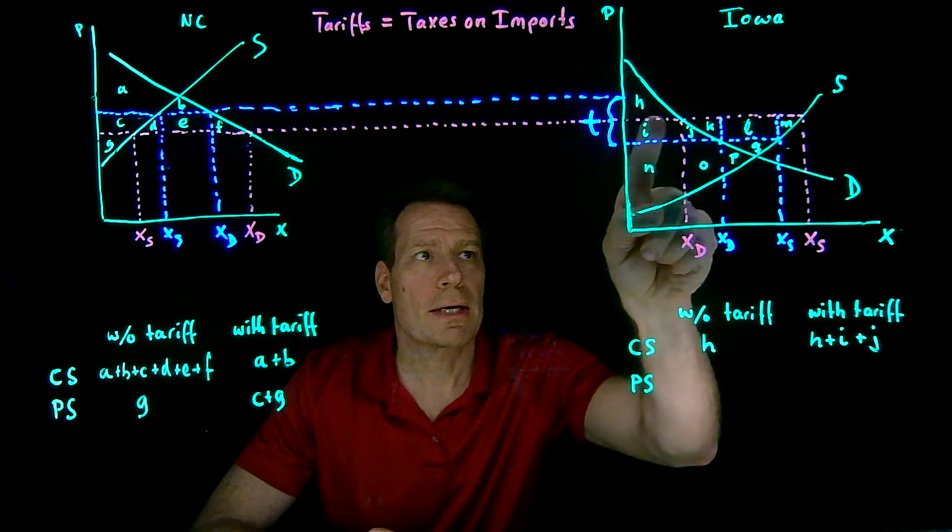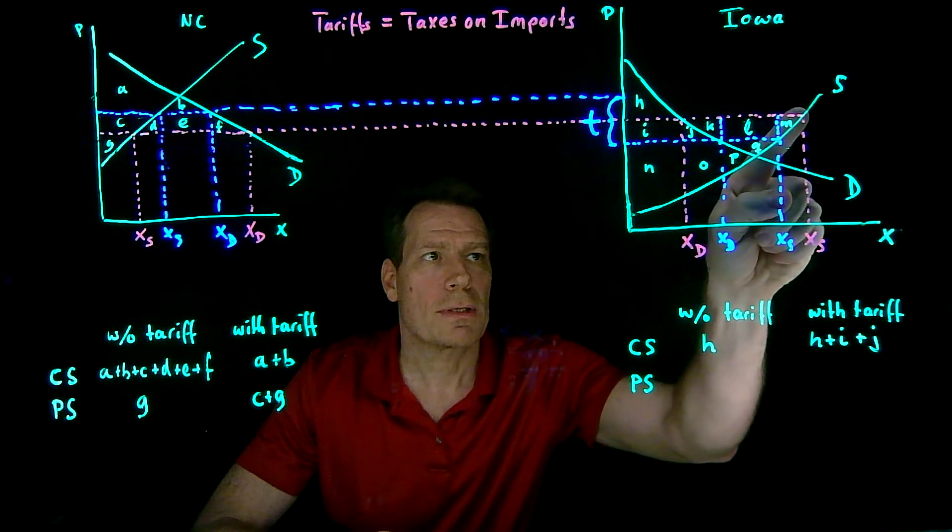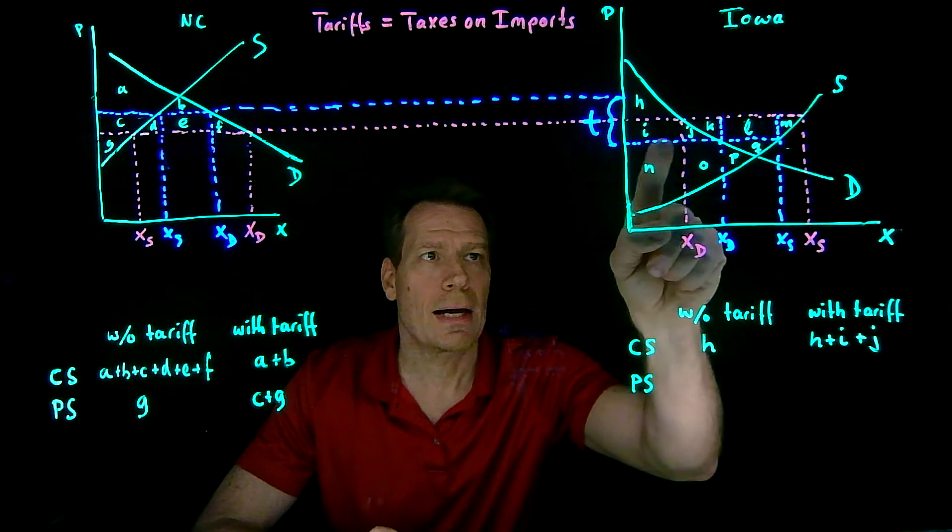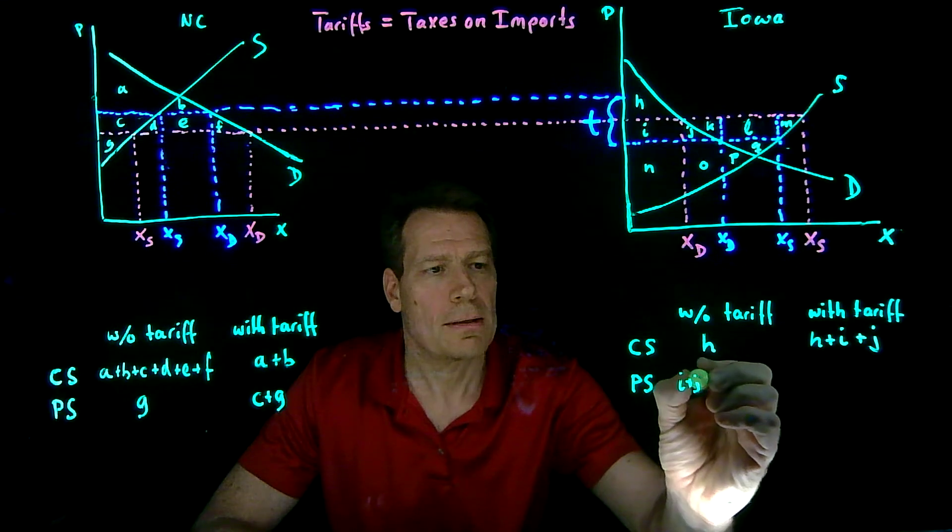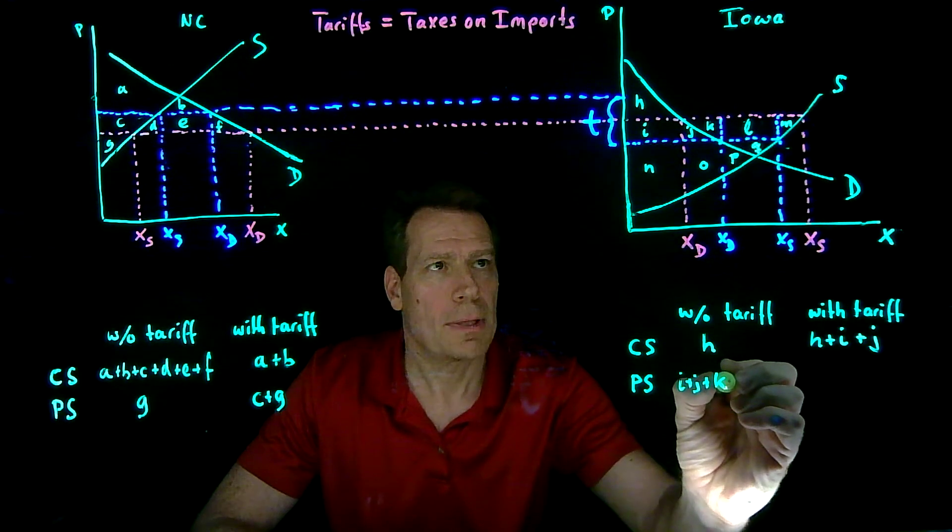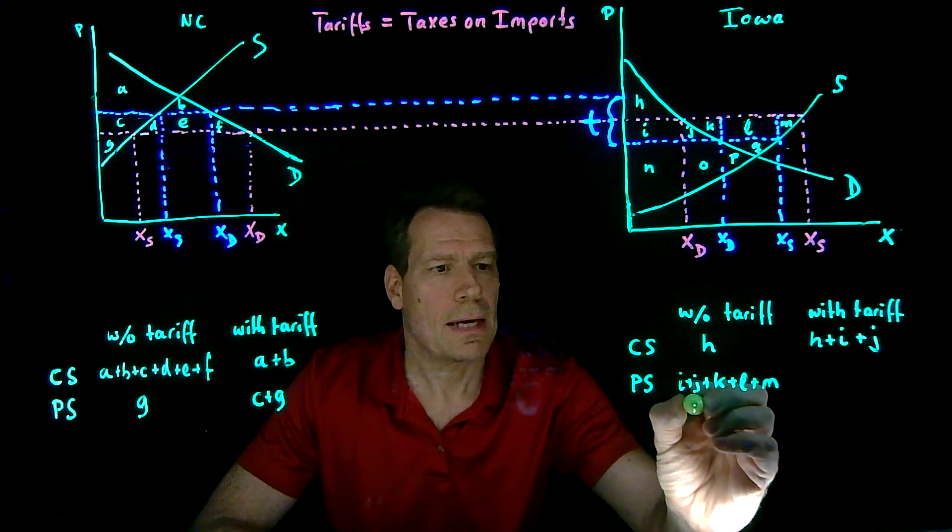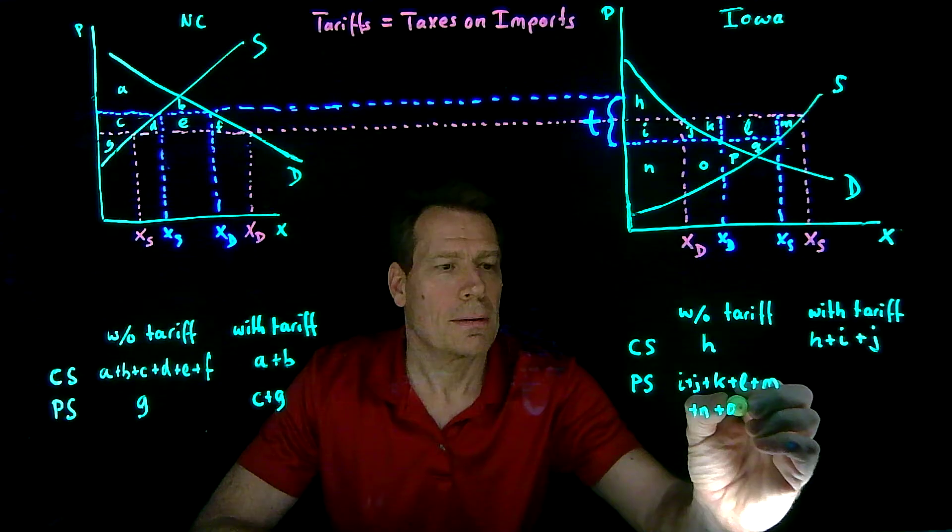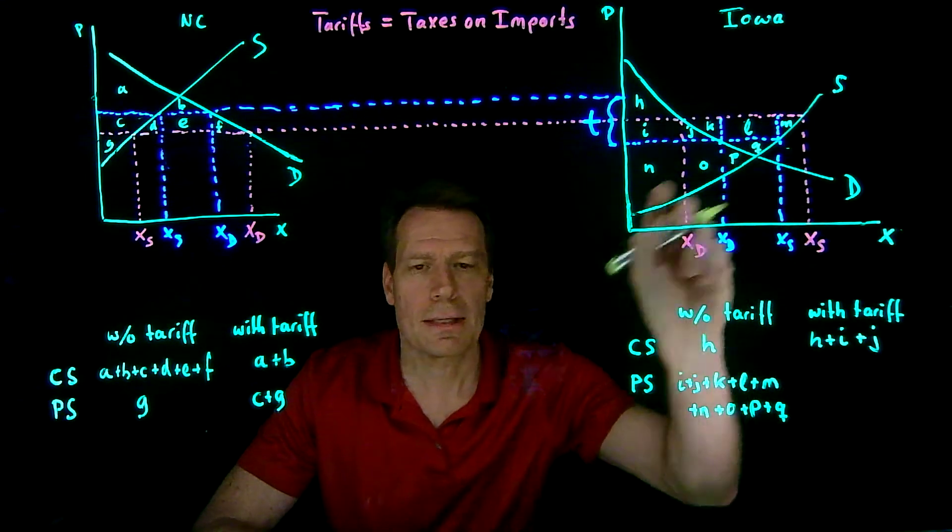Producers originally were selling at that magenta price, so they got everything below that magenta price down to the supply curve. So they have all of these letters in here: I, J, K, and so forth. So I plus J plus K plus L plus M plus N plus O plus P plus Q.